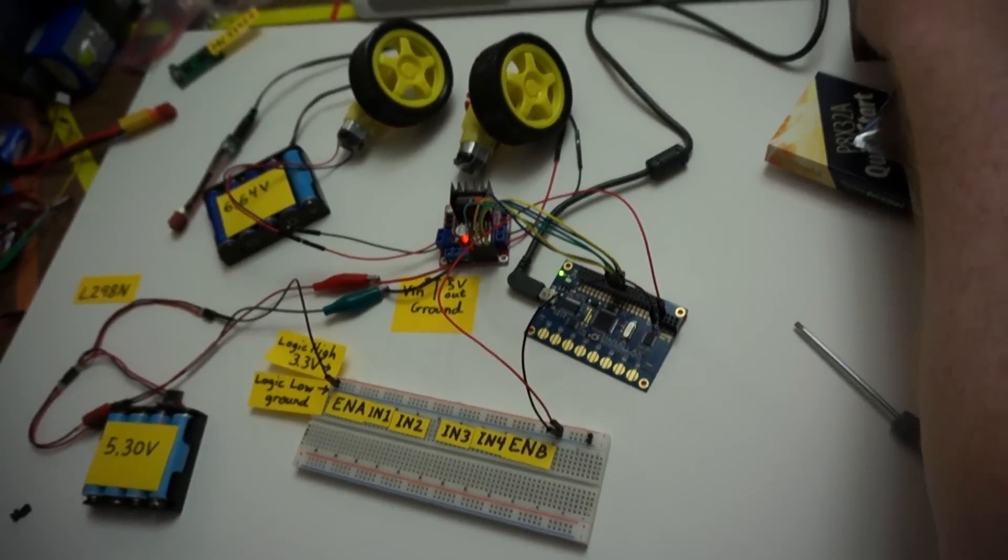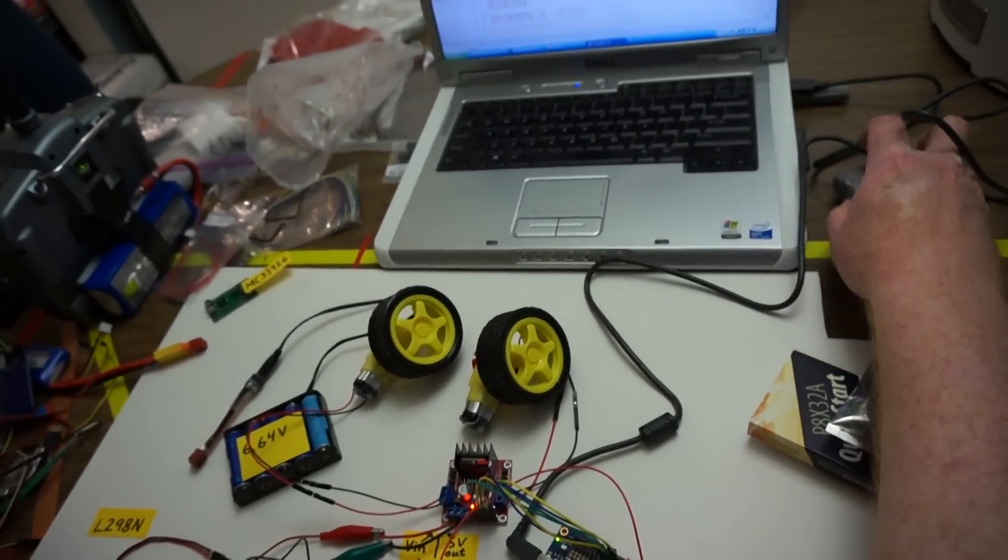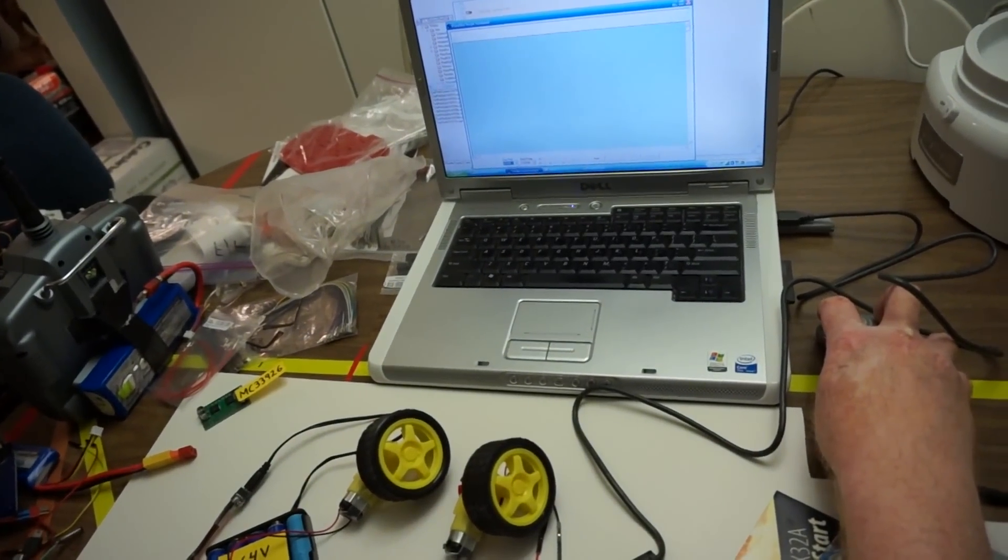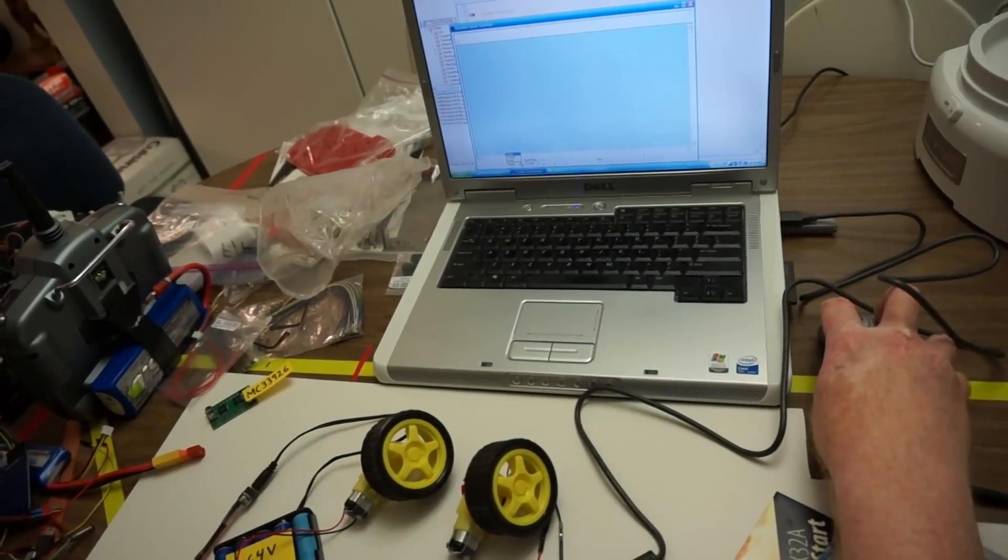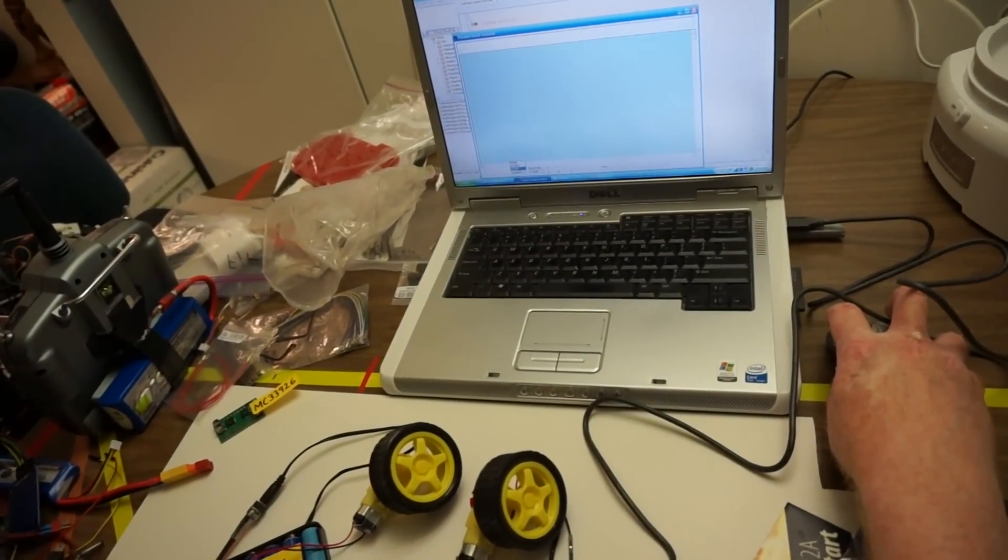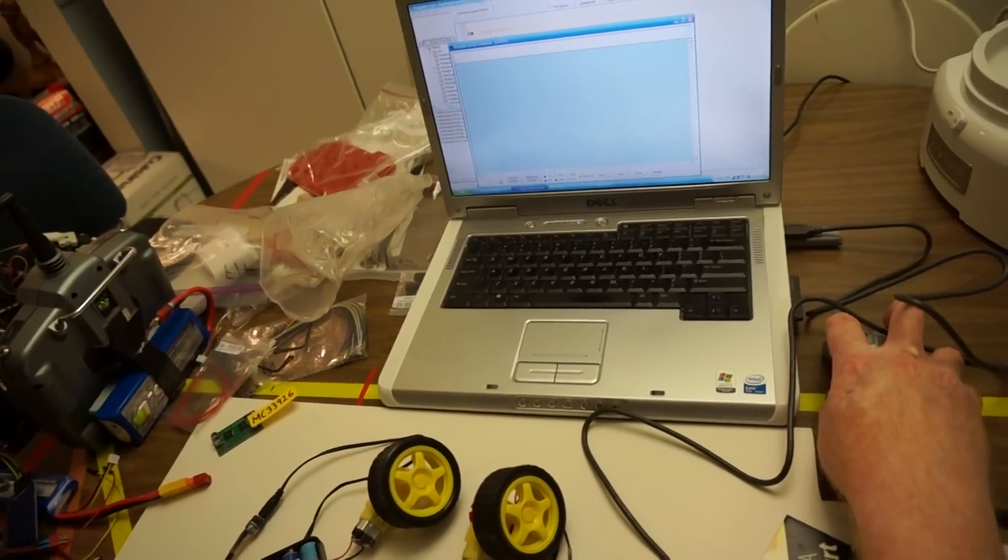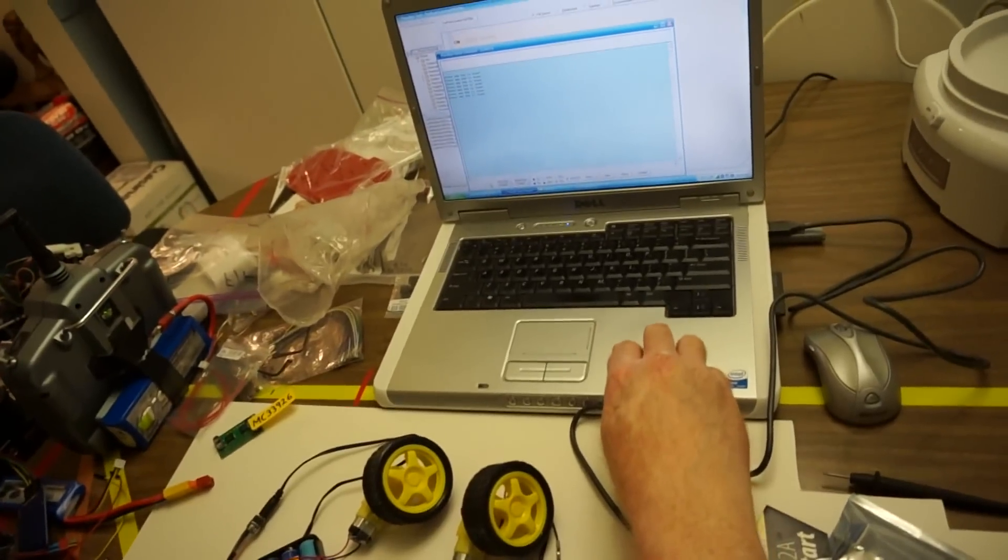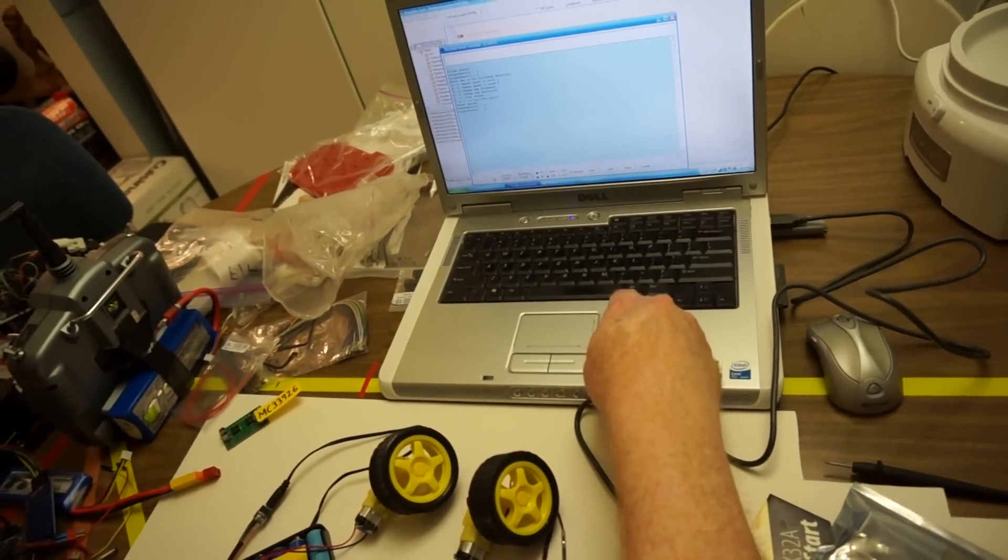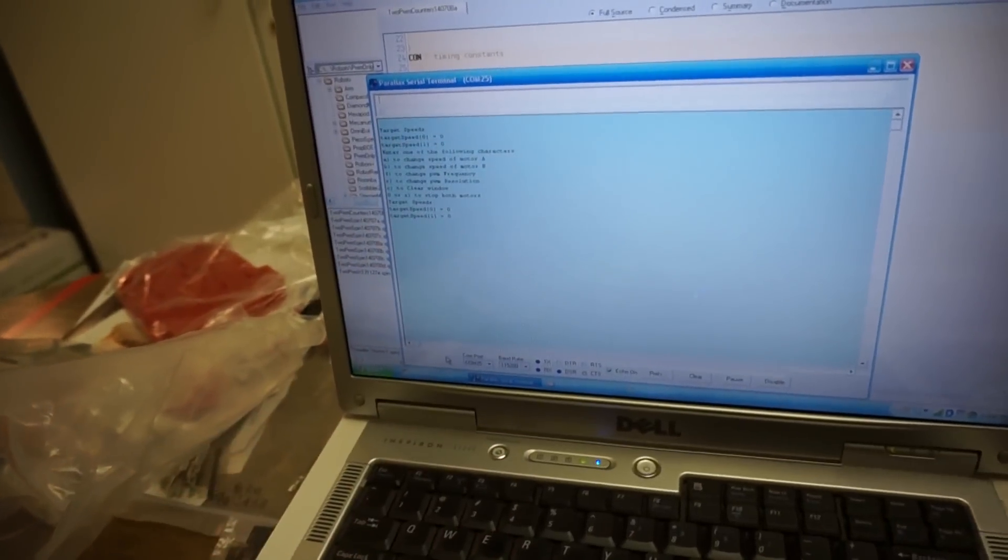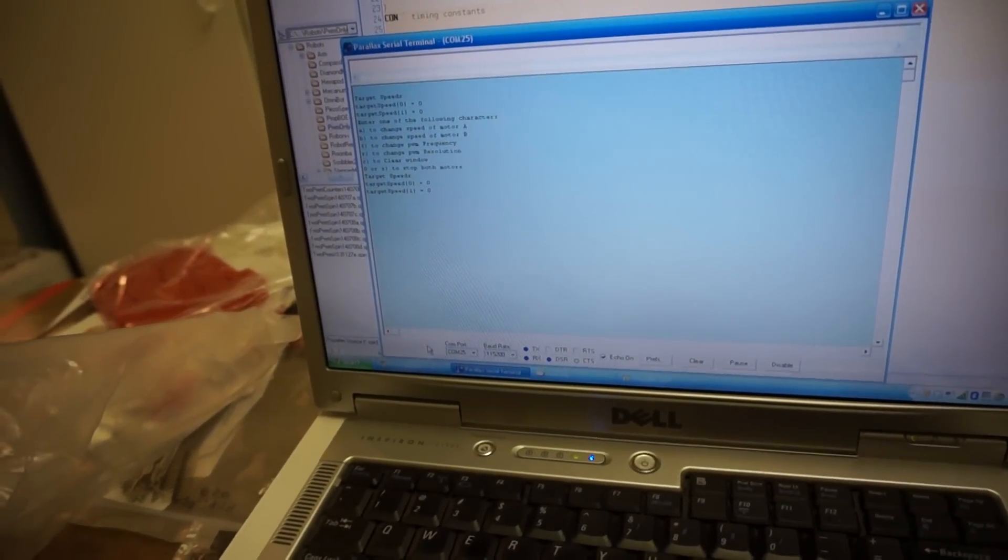And in order to control this, we need to enter in, right now it's controlled through a serial terminal. And I will find the serial port, which is either 4 or 25. I'm going to guess 25. Okay, and it says press any key to start. I'll press the key. Tells us the speed right now, zero on both motors, gives me a little bit of a menu.